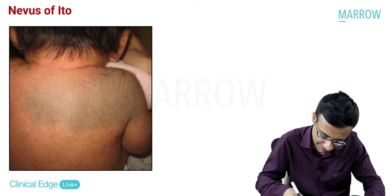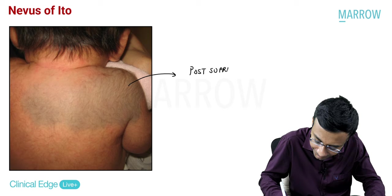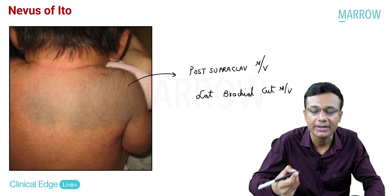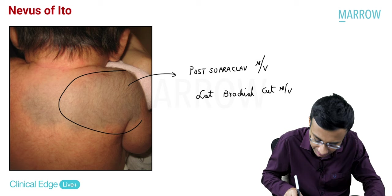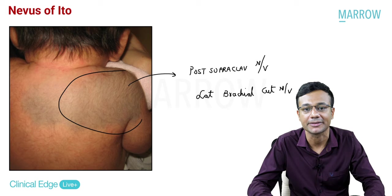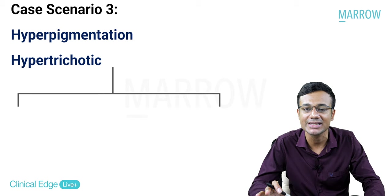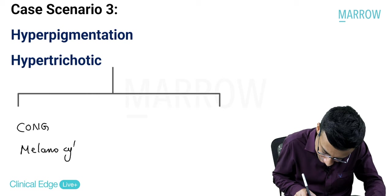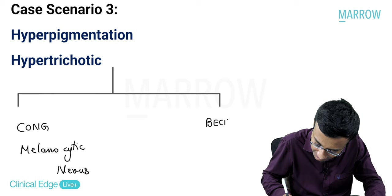Nevus of Ito follows the posterior supraclavicular nerve and lateral brachial cutaneous nerve, so distribution is on the shoulder and scapular region. The color is blue to slate gray because the problem is in the dermis. Case scenario three: a hyperpigmented, hypertrichotic lesion. Two important differential diagnoses: number one, congenital melanocytic nevus; number two, Becker's nevus.